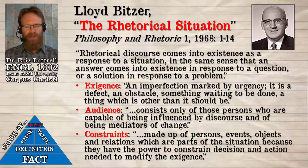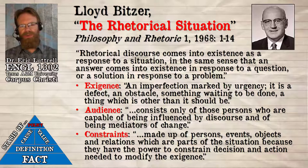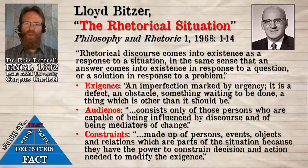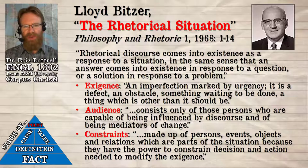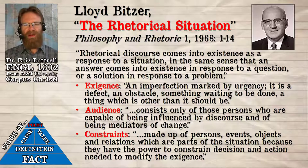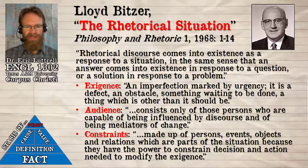Even when discussing cause and effect, value, or definition, your audience is only the people able to follow through with that advice — not just anyone who will listen. And to act on an issue there will be constraints. We can't just say everyone ought to move mountains to make something happen. Constraints are made up of persons, events, objects, and relationships which have the power to constrain the decision and action needed to modify the exigence. Some constraints limit the action you're capable of achieving; others — which we'll revisit when discussing the backfire effect and Rogerian argument — affect whether people will give your arguments a fair, open-minded hearing. You have to know those constraints, and to do that you have to know your audience and the problem you're addressing.